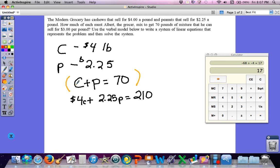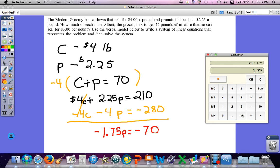So there's a few different ways to do this one. I like elimination and I also like multiplying or dividing first. So I'm going to multiply everything by negative 4. So this equation becomes negative 4C, negative 4P, and negative 4 times 70 becomes negative 280. So 4C and negative 4C cancels out. 2.25 minus 4 is negative 1.75P and 210 minus 280 is negative 70. If I divide both sides by negative 1.75, I need 40 pounds of peanuts.